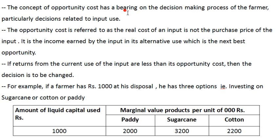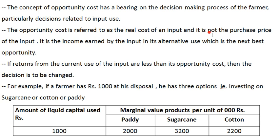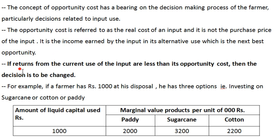The concept of opportunity cost has a bearing on the decision-making process of the farmer, particularly decisions related to input use in a particular production activity. Opportunity cost is also referred to as the real cost of an input. The real cost of an input is not the purchase price of the input — it is the income earned by the input in its alternative use, which is the next best opportunity. This principle guides the farmer such that if returns from the current use of the input are less than its opportunity cost, then the decision is to be changed.